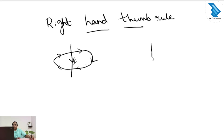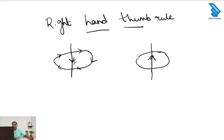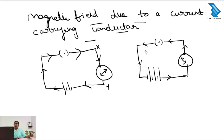Next, we place the current in the upward direction in the current carrying conductor. When the current is in the upward direction, we place the thumb in the upward direction. The direction of the magnetic field lines will then be in the anticlockwise direction. So according to the right hand thumb rule, if you hold a current carrying conductor in the right hand, the thumb indicates the direction of electric current and the curled fingers indicate the direction of the magnetic field lines.